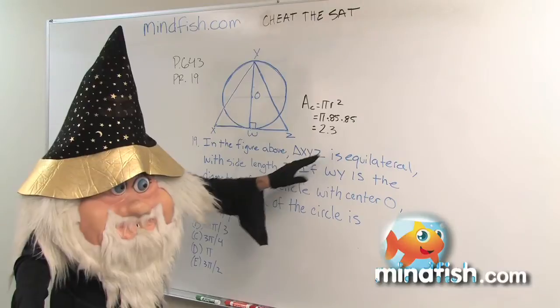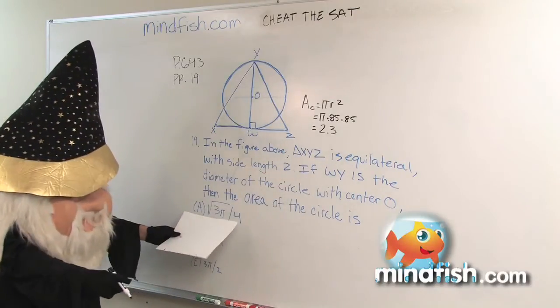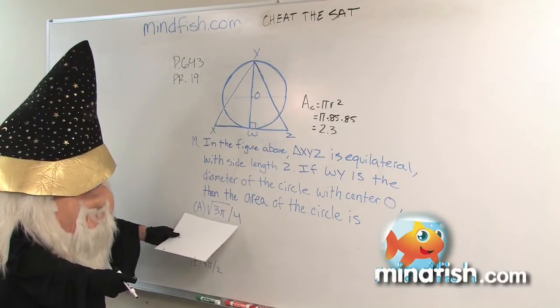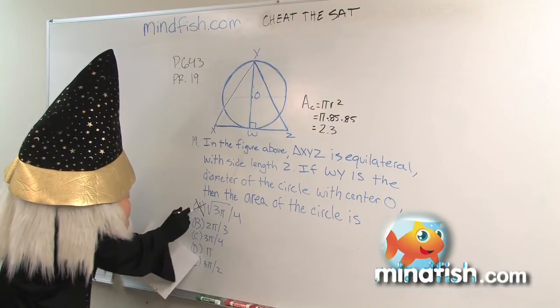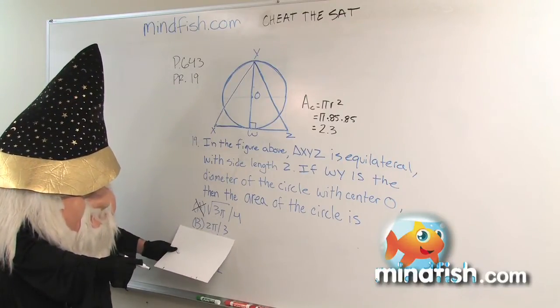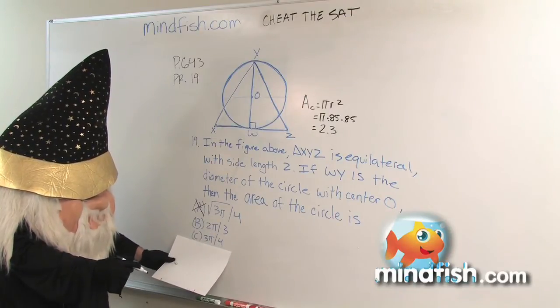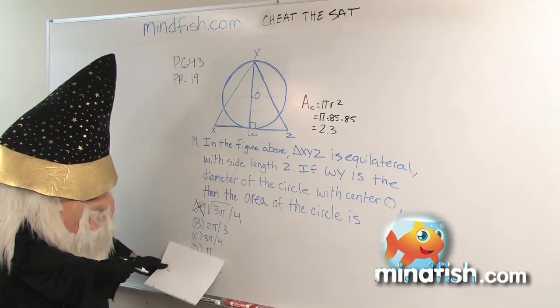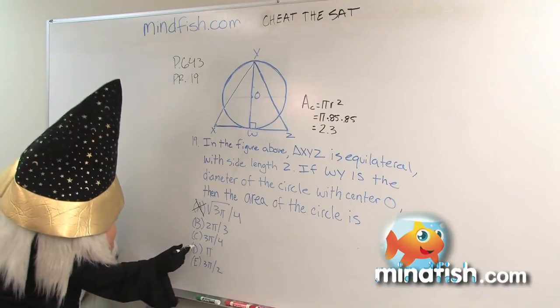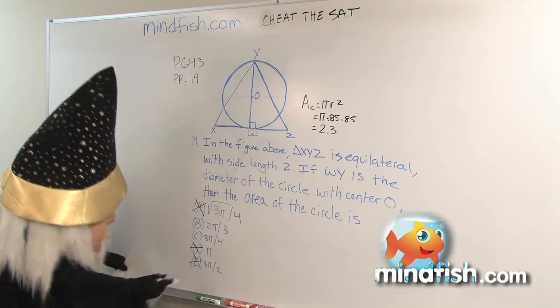Now we know roughly what our answer is. We're going to come down here and take a look at these answers. This answer right here is approximately equal to 0.75, not even close. This answer is just a little bit over 2, so that's reasonable. This answer is a little bit bigger than 2, like 2.3 or 2.4, so it's reasonable. This answer is far too big, and this answer is far too big.